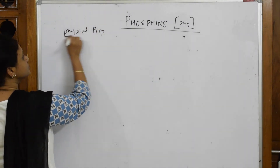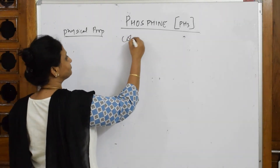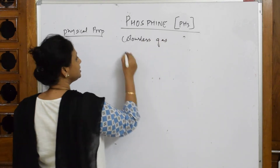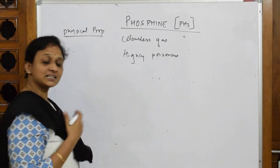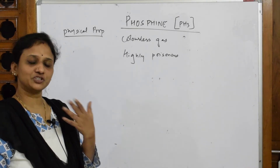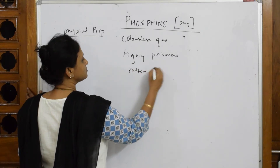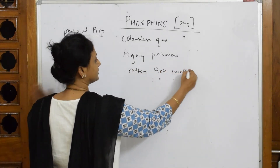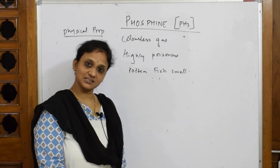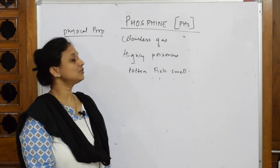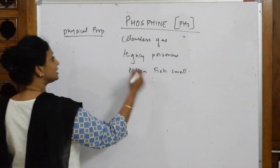The first physical property: phosphine is a colorless gas. Write that down — colorless gas, and it is highly poisonous in nature. It also has an odor of rotten fish. Remember these clues because they're frequently asked: what is the highly poisonous gas which is colorless and has a rotten fish smell? That is phosphine.